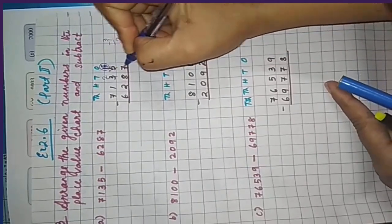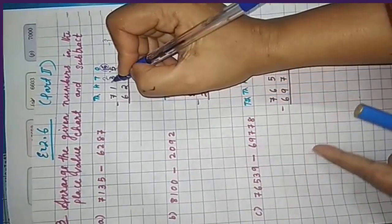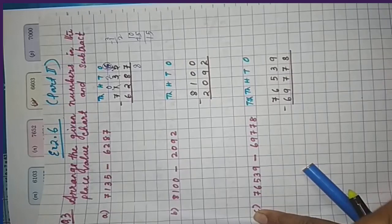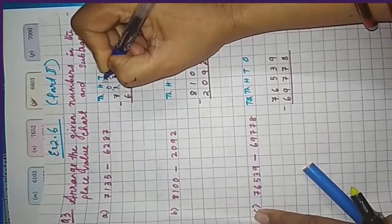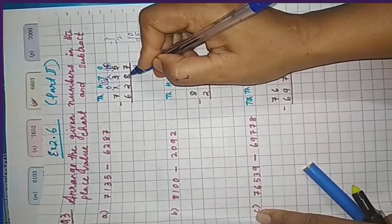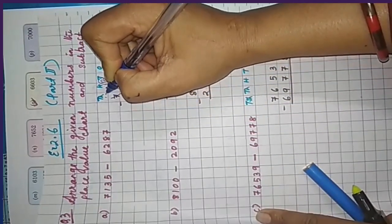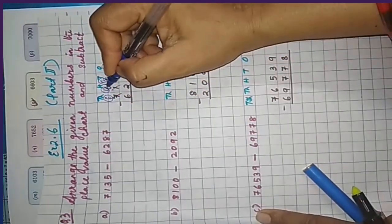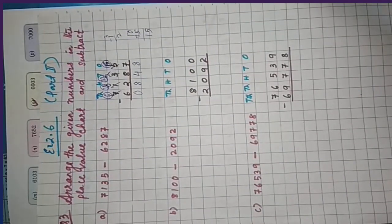In place of 5, write 15. 15 minus 7 is 8. Now 2 minus 8 is not possible, so 2 has to borrow from the thousands place. There is 1 thousand — if we borrow it, 0 is left there, and the 2 tens become 12 tens. 12 minus 8 is 4. Then 0 minus 2 is not possible, so borrow again: 7 minus 1 is 6, and the 0 becomes 10. 10 minus 2 is 8.